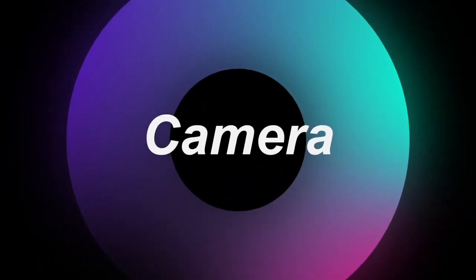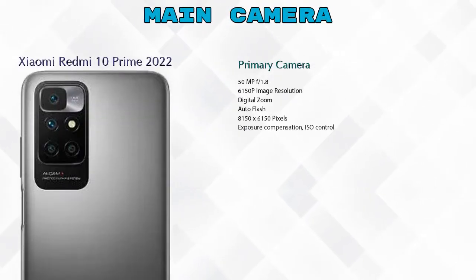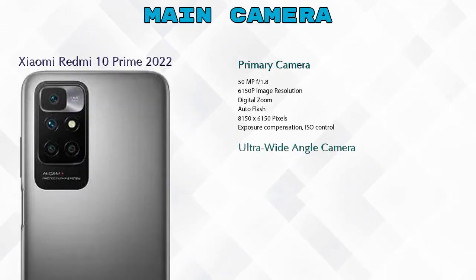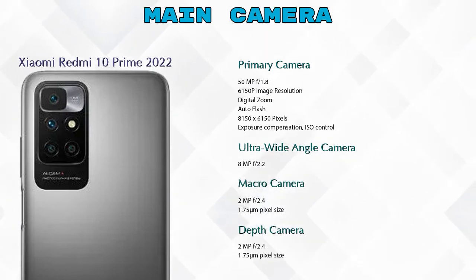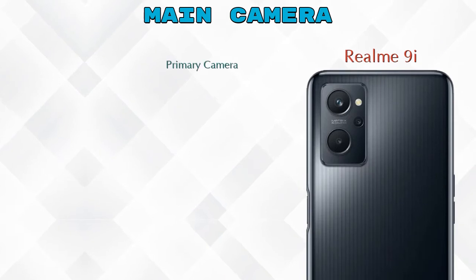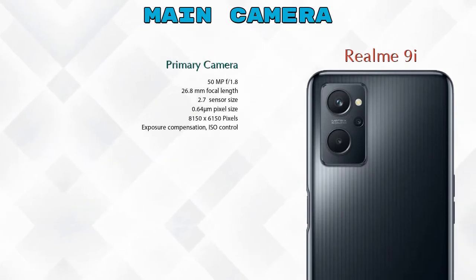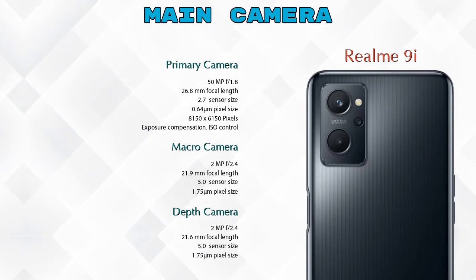Now let's talk about the camera. For rear cameras, the Redmi 10 Prime 2022 has four cameras: a primary camera, an ultra-wide angle camera, a macro camera, and a depth camera. The Realme 9i has three cameras: a primary camera, a macro camera, and a depth camera.